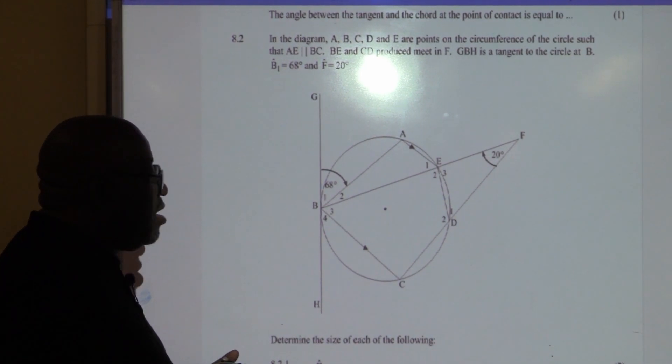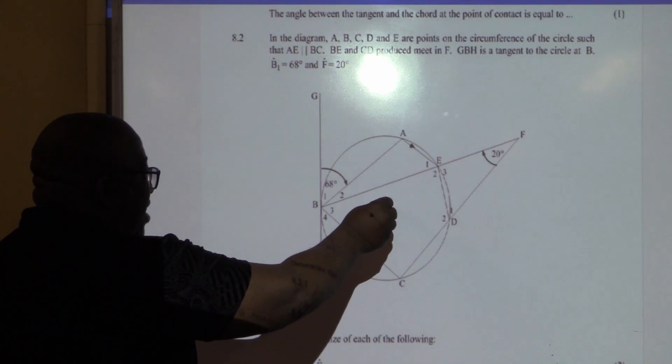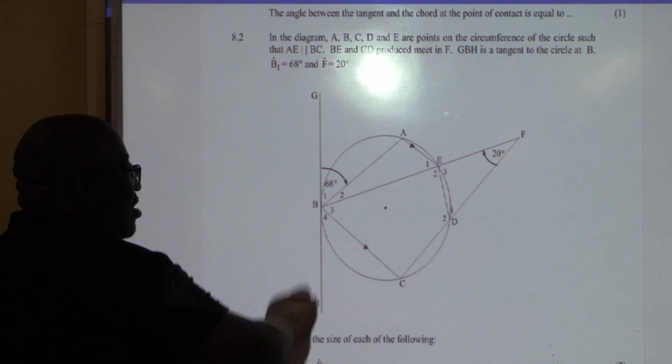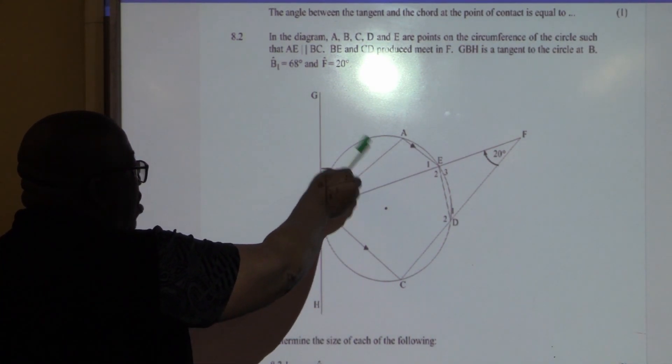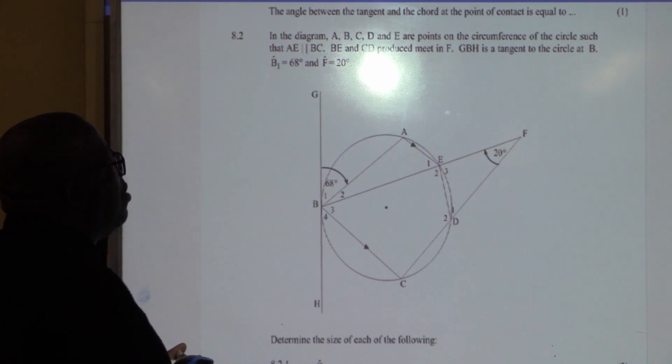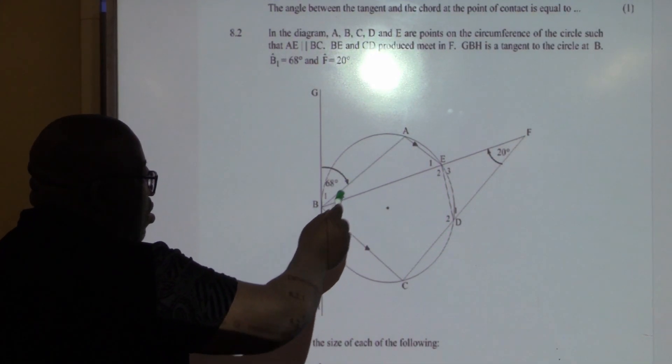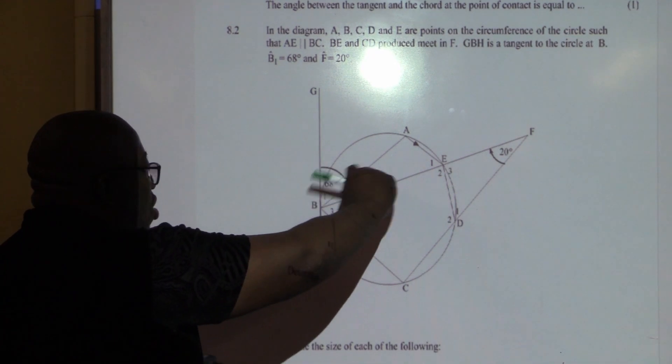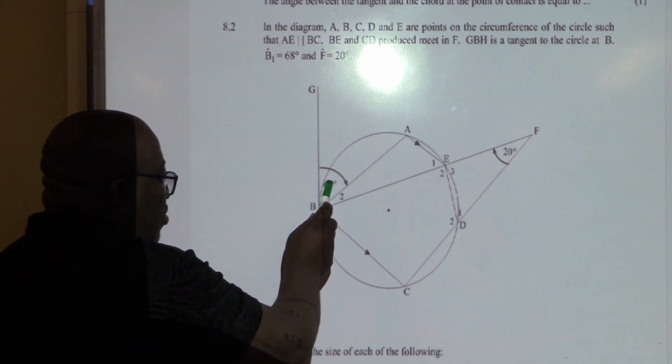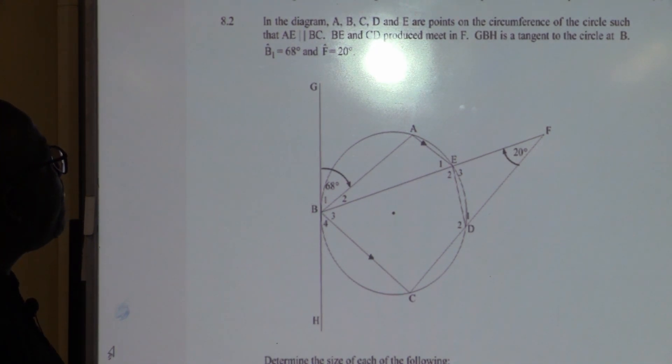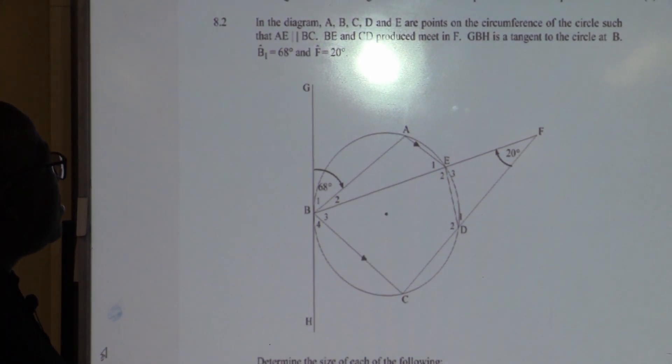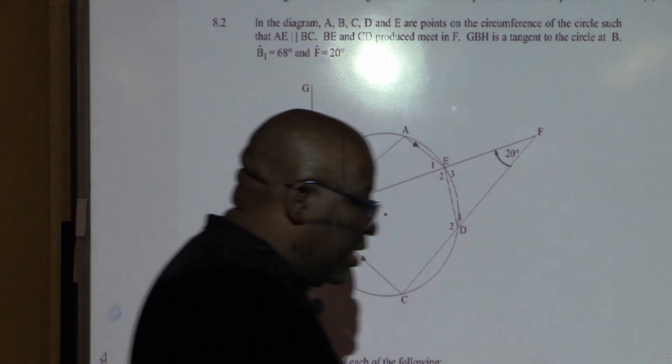Tangent-chord theorem. This is a chord. This is a tangent. So, this one will work out. So, this is a chord. This is a tangent. I go with the chord to the circumference. So, this angle is equal to that one. We go to that one from tangent-chord theorem. B1 is 68 and F is 20. Let's see what we have.